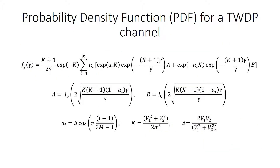The probability density function for a two-wave diffuse power distribution is specified within the paper, utilizing a multitude of average S and R values, K factors, and modified Bessel functions. The fading channel can be assembled separately from this particular density function, but this value will be key to determining the average probability of detection within a two-wave diffuse power fading environment, presented later on in the presentation.